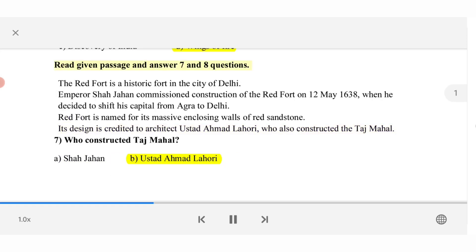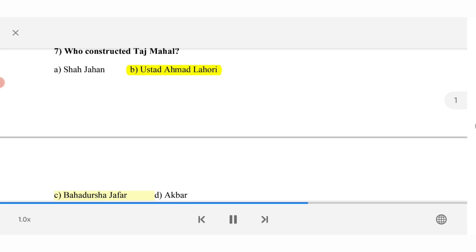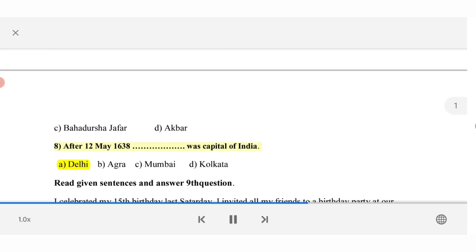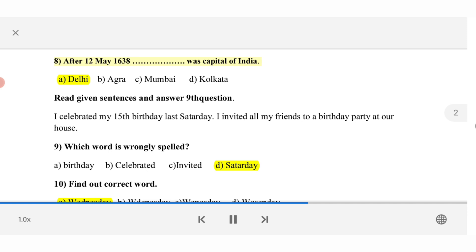Read given passage and answer 7 and 8 questions. The Red Fort is a historic fort in the city of Delhi. Emperor Shah Jahan commissioned construction of the Red Fort on the 12th of May 1638, when he decided to shift his capital from Agra to Delhi. Red Fort is named for its massive enclosing walls of red sandstone. Its design is credited to architect Ustad Ahmed Lahori, who also constructed the Taj Mahal. 7. Who constructed Taj Mahal. A. Shah Jahan. B. Ustad Ahmed Lahori. C. Bahadur Shah Zafar. D. Akbar. 8. After the 12th of May 1638, was capital of India. A. Delhi. B. Agra. C. Mumbai. D. Kolkata.